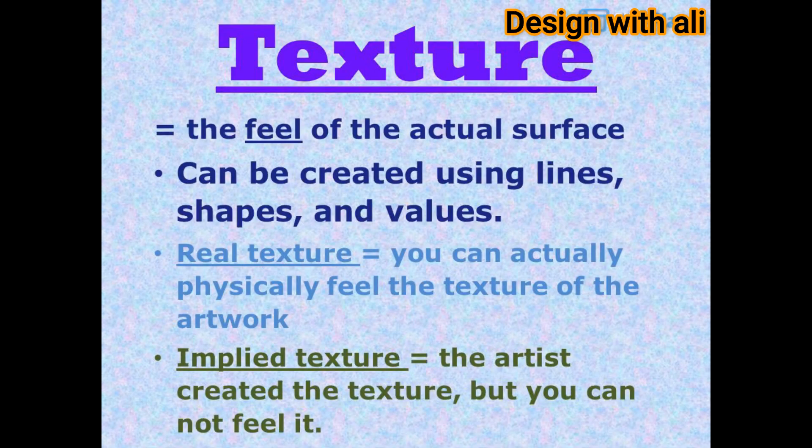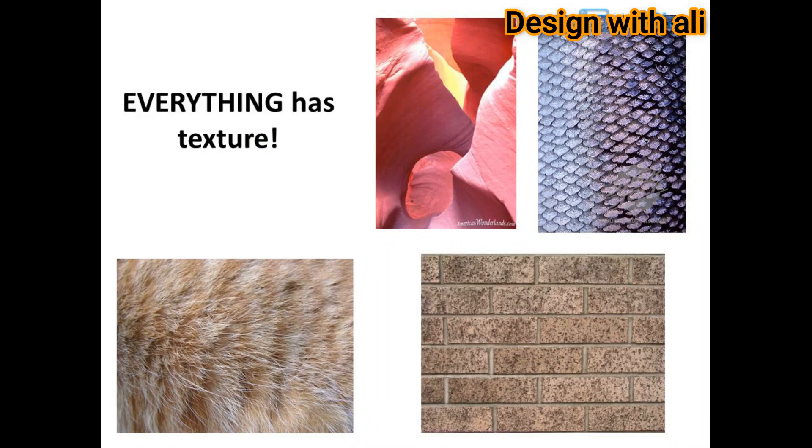Texture can be created using lines, shapes, and values. It equals the feel of the actual surface. Real texture means you can actually physically feel the texture of the artwork. Implied texture means the artist created the texture, but you cannot feel it. Everything has texture.